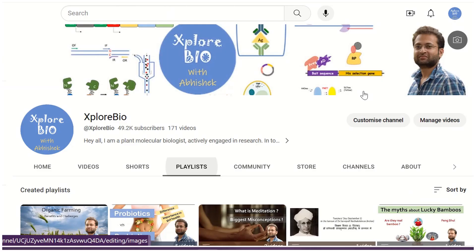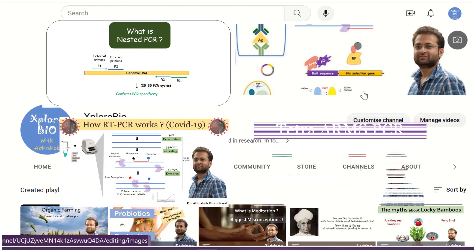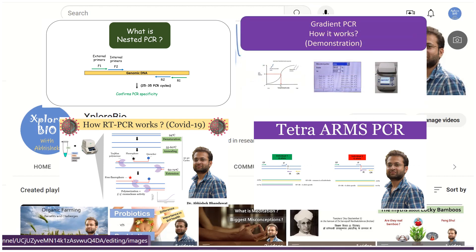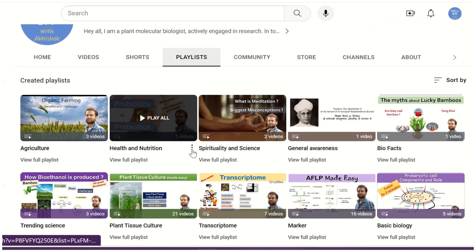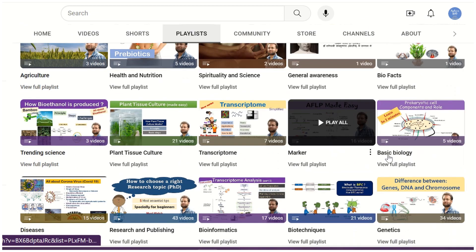So that's all about Anchored PCR. If you want to learn more about other PCR variants like real-time PCR, nested PCR, tetrahedral PCR, gradient PCR, different types of molecular markers, techniques, transcriptome analysis, plant tissue culture, research and publishing, do check out my playlists on them.